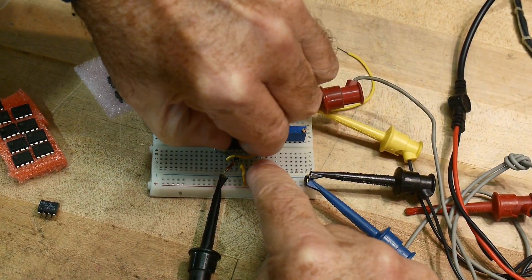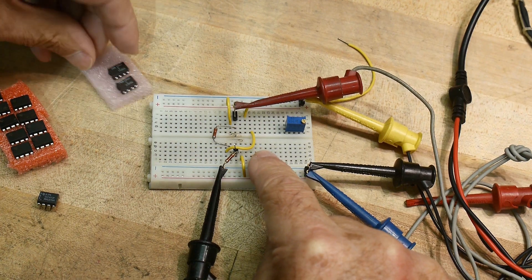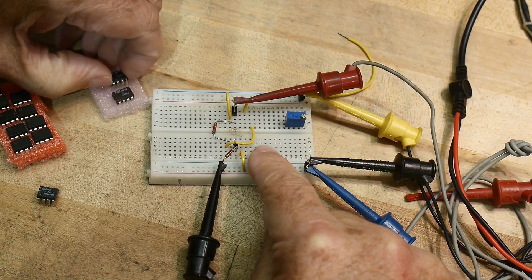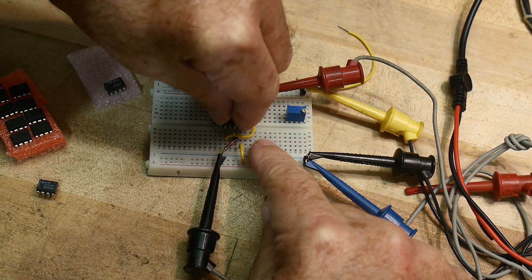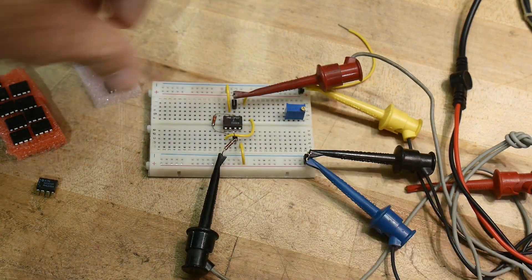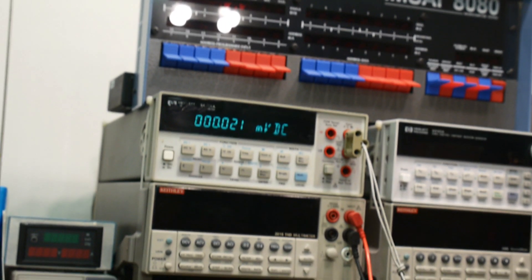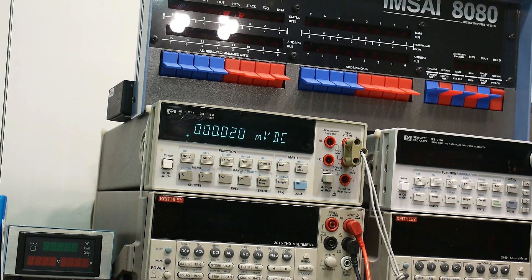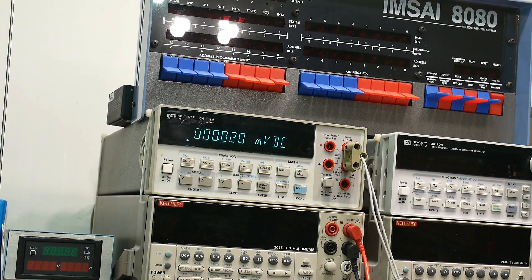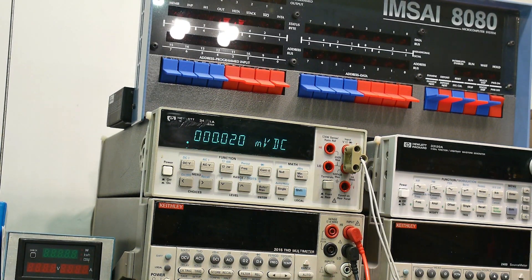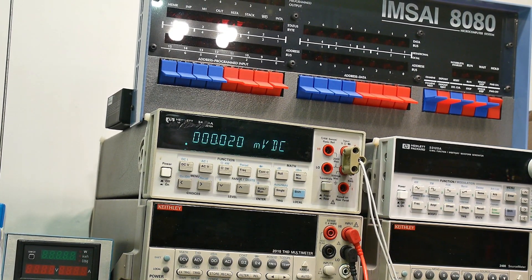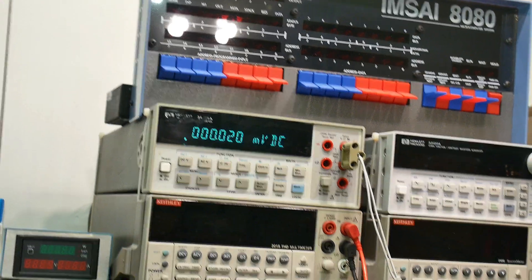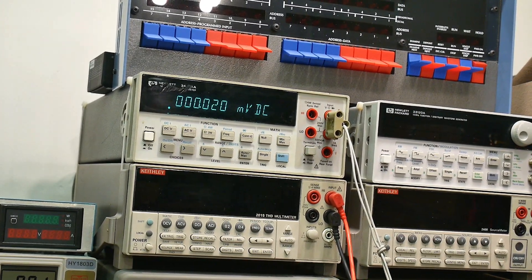All right, take that one out and let's put in a good one. So this is an official PMI OP07. So let's pop him in. And look at that - 20 microvolts, 20 microvolts. Very very very nice. And that's why you spend money on these things to get that. Sometimes it's important, sometimes it isn't. But if it is important, you need it.